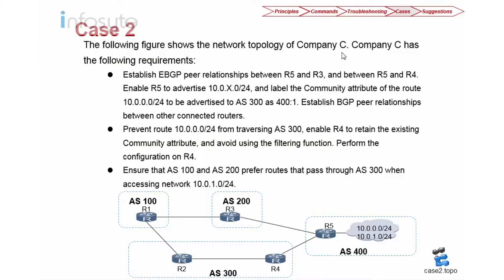Let's look into case number two. This is on company C. Company C has the following requirements. For the first requirement, establish eBGP peering between R5 and R3, and also eBGP between R5 and R4. We are going to advertise 10.0.X.0 using the network command and label the community attribute of the route 10.0.0.0 to be advertised to AS300.